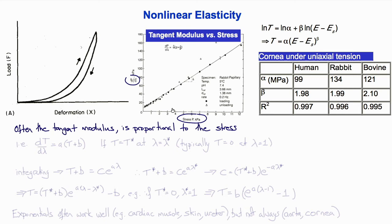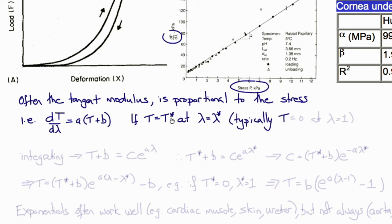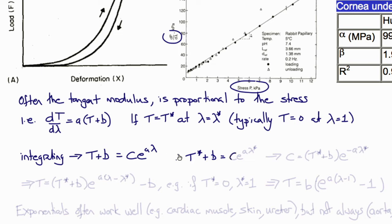If there is a linear relationship between the slope of the stress-strain curve and the stress, then we have the differential equation dT/dλ = A·T + B, where A is the slope and B is the intercept of this linear relationship seen in rabbit papillary muscle. To integrate this, if we know the stress T at some value λ = λ*, and the typical case would be T = 0 when the stretch ratio is 1, then we can integrate to obtain T* + B = C·e^(Aλ), giving C = (T* + B)·e^(−Aλ*).